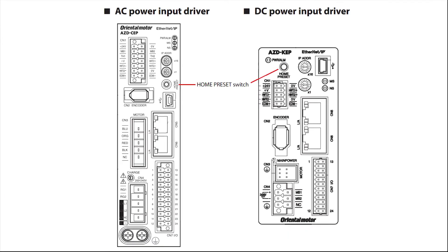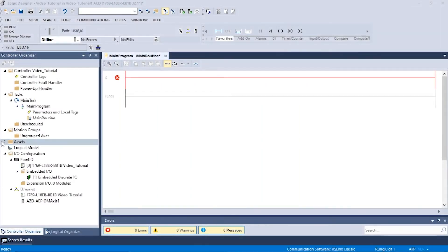First, we need to start by setting up the home position using the P preset input or the home preset switch on the driver. Once that has been done, we can begin by opening the Studio 5000 software. In the Controller Organizer section, we will open the Main Routine window.